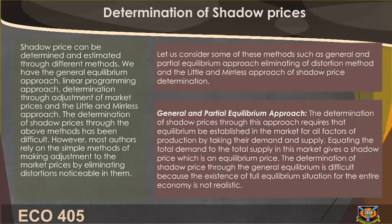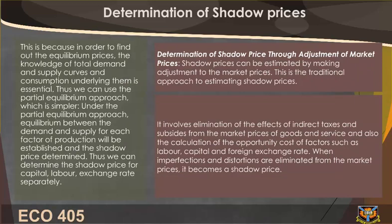General and Partial Equilibrium Approach. The determination of shadow prices through this approach requires that equilibrium be established in the market for all factors of production by equating total demand to total supply, giving a shadow price which is an equilibrium price. This is difficult because the existence of full equilibrium for the entire economy is not realistic, as it requires knowledge of total demand and supply curves.